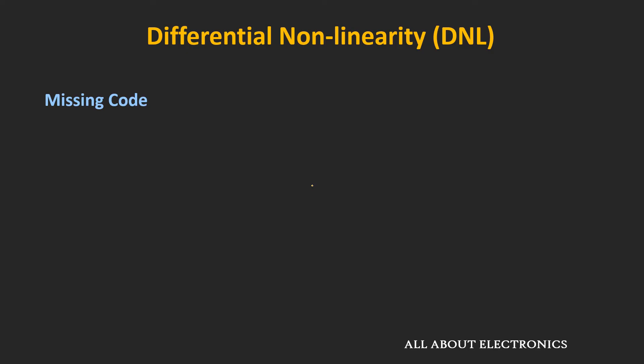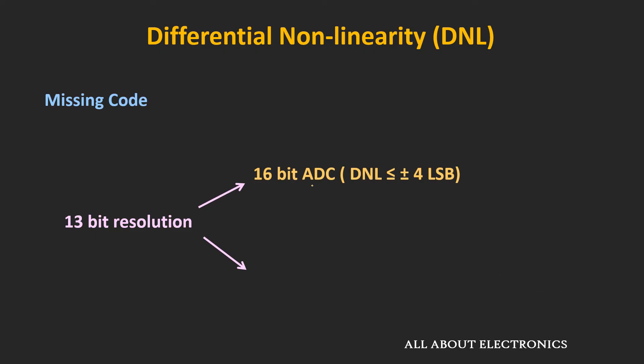Sometimes, even if there is a missing code in the ADC, it won't affect the performance of some applications, provided the ADC is chosen properly. For example, if an application requires 13-bit resolution, and we have two options — a 16-bit ADC with ±0.5 LSB DNL, or a 16-bit ADC with DNL less than 1 LSB — the second ADC would be at least 2–3 times more costly. But the first ADC would also do the job, because with 4 LSB of DNL, the effective resolution provided is 14 bits, which is more than required. So before selecting an ADC for a specific application, one should do proper error budgeting.